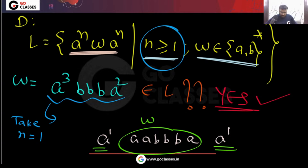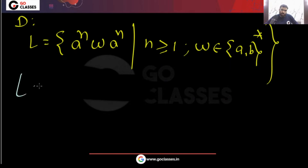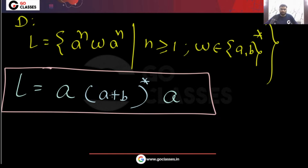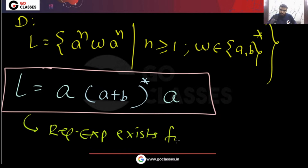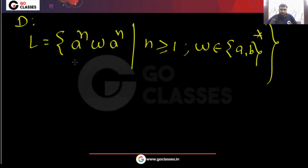Once you understand the language, you can see it is basically all strings starting with 'a' and ending with 'a', with anything in between. The regular expression is: a (a + b)* a. Because a regular expression exists for L, L is regular.